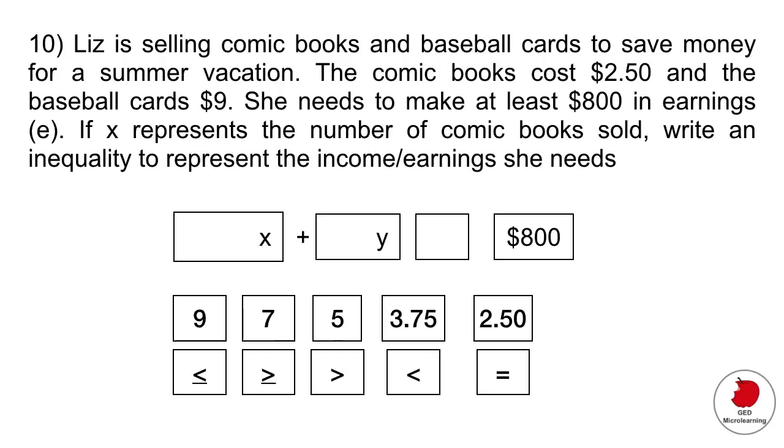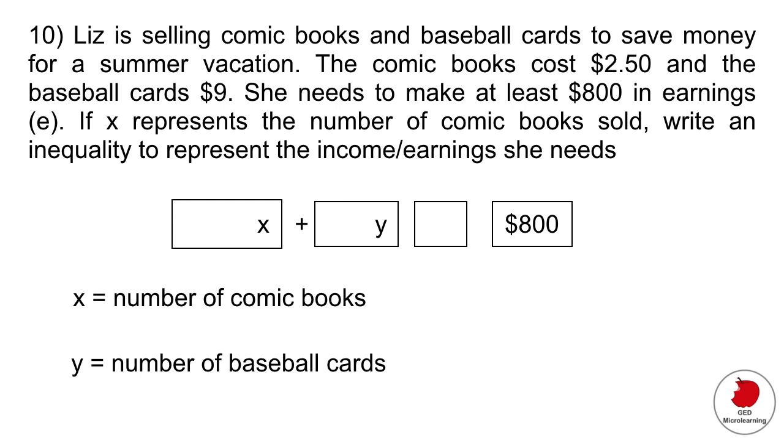Our final question - sometimes in the GED they ask you to set up equations. They want you to think of problems in an algebra-like fashion. Once again we have these drag and drop boxes that you have to place into this equation. It says Liz is selling comic books and baseball cards to save money for a summer vacation. The comic books cost $2.50, the baseball cards $9. She needs to make at least $800 in earnings. If x represents the number of comic books sold, write an inequality to represent the income earning she needs. We're going to call the comic books x - that's the number of comic books sold which we don't know - and y is going to be the number of baseball cards that she sells which we also don't know.